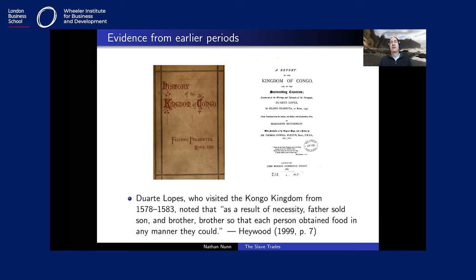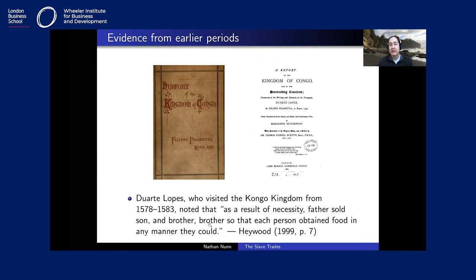Some direct quotes from these accounts: 'sold by his relatives,' 'sold by his family,' 'sold by his brother because they could not agree,' 'sold by a supposed friend,' 'treacherous friend enticed him on board a Portuguese vessel.' Similar accounts come from the Congo kingdom in the 16th century — Duarte Lopez, who visited for five years, writes: 'As a result of necessity, father sold son and brother sold brother, so that each person could obtain food in any manner that they could.'